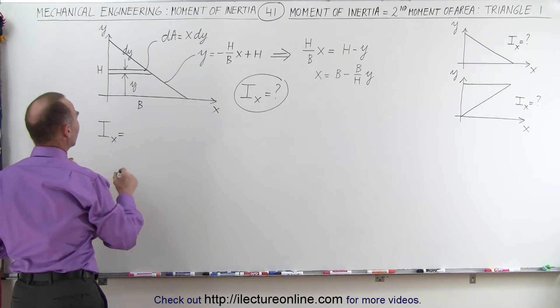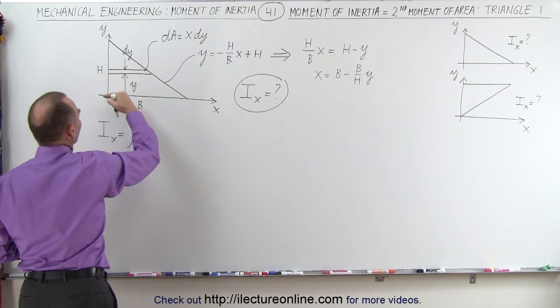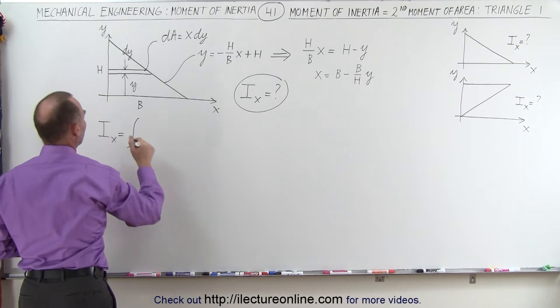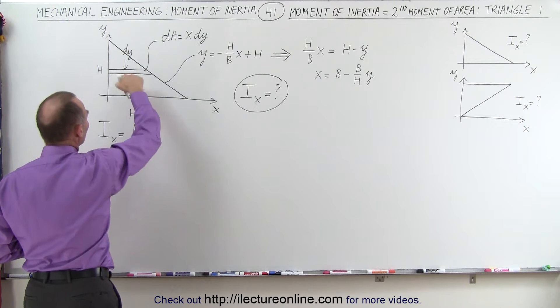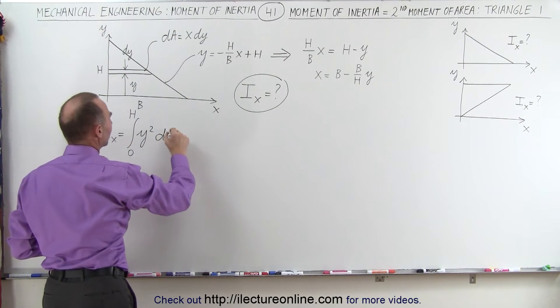So i sub x is equal to the integral. We're going to integrate over all these little area elements from y equals 0 to y equals h, from 0 to h of the distance squared, that would be y squared, times the area element dA.